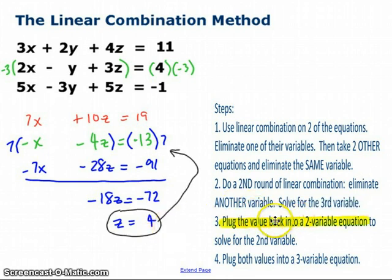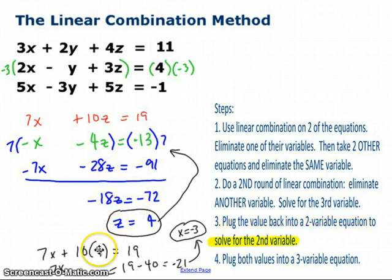Now I'm going to plug that answer back into either of the two variable equations. I can either put z equals 4 back into the red one, I could put it into the green one if I want, or I could even put it into the blue one if I want. I've chosen to put it into that green one there. All right, so 7x plus 10, I'm sorry, into the red one. Sorry about that. 7x plus 10 now times 4 equals 19. Or in other words, 7x equals 19 minus 40. Keep solving that down, and you're going to find that x equals negative 3.